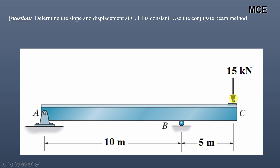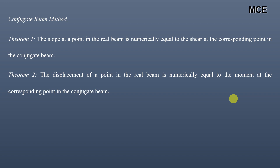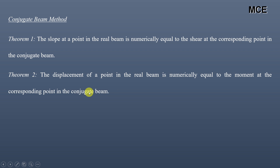The conjugate beam method has two theorems. Theorem one states that the slope at any point in the real beam is numerically equal to the shear at the corresponding point in the conjugate beam. Theorem two states that the displacement of a point in a real beam is numerically equal to the moment at the corresponding point in the conjugate beam. So slope equals shear in the conjugate beam, and displacement equals moment in the conjugate beam.